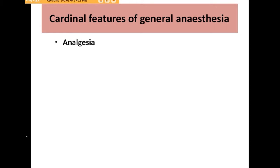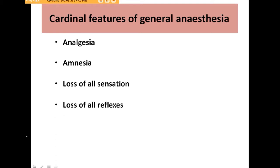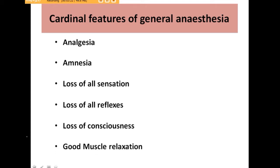Cardinal features to consider a drug as a general anesthetic are that it should provide analgesia, amnesia (that means loss of memory), loss of all sensations like pain, touch, temperature, and proprioception, loss of all reflexes — if an incision is given on the skin or peritoneum there should be no reflex movement — loss of consciousness so the patient has no awareness of the ongoing procedure, and a good muscle relaxant effect so the person becomes immobile during the procedure.